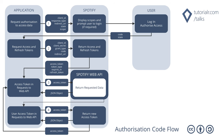Authorization code flow is suitable for long-running applications where the user grants permission only once and provides an access token that can be refreshed, performed on a back-end service rather than a client such as a browser or mobile app. First, the application requests authorization where the user logs in and authorizes access. Next, the application requests refresh and access tokens with the code returned in the redirect URI. Then use the access token to access the Spotify Web API, which is set to expire after a short time. Finally, when needed, request a refreshed access token.